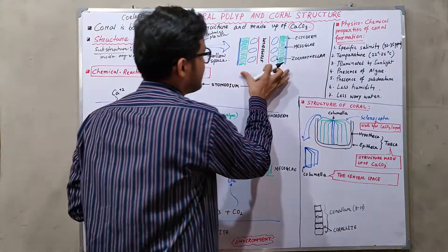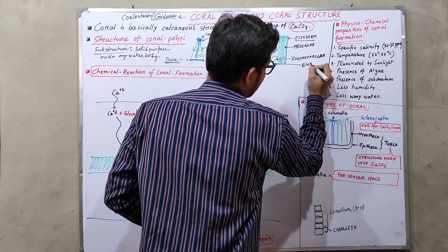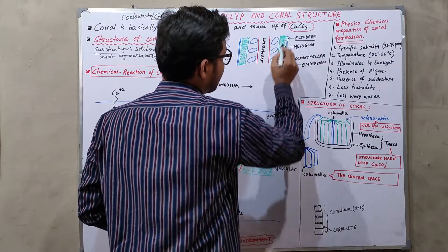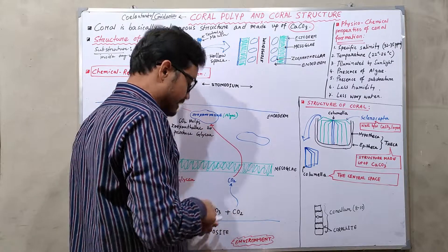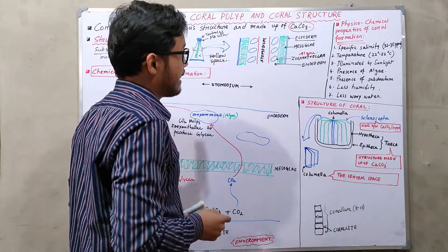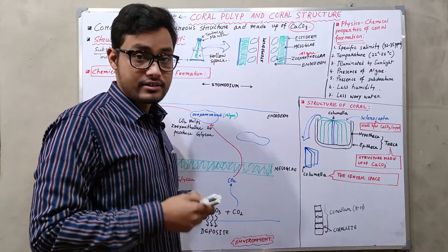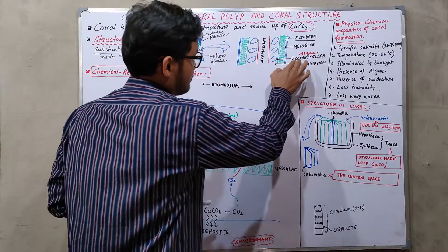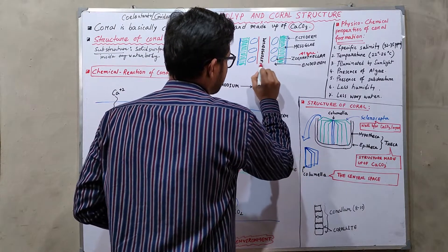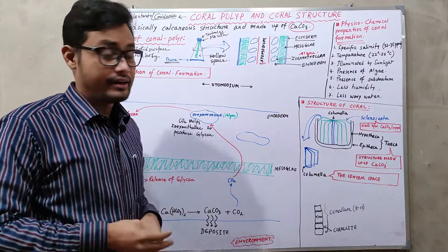If we enlarge the structure of the stomodium, we observe that the ectoderm is on the outside and the endoderm is on the inside. There is also the mesoglia, and within it are zooxanthellae — a type of algae. Zooxanthellae help the coral polyp with photosynthesis, and the sustainability of the coral polyp depends upon them.